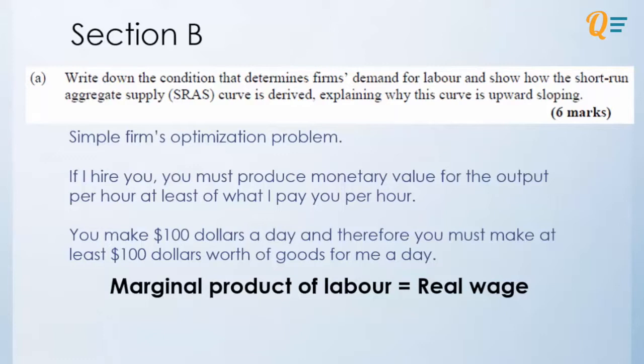So from a very macro point of view, let's look at one firm. So if a firm hires you, you must produce monetary value for the output per hour at least of what I pay you per hour. So a simple example is you make $100 a day and therefore you must make at least $100 worth of goods for me a day. So simply, it just means marginal product of labor equals to real wage.